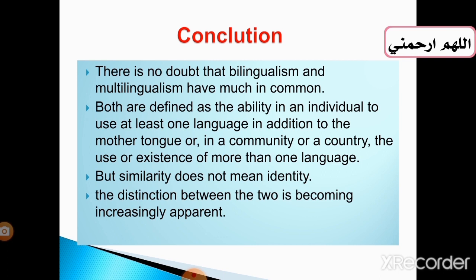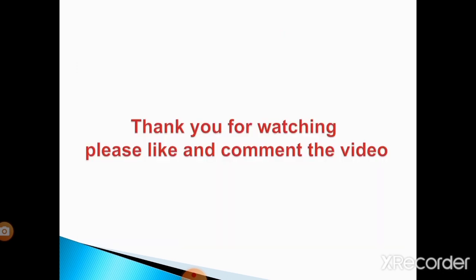To conclude, there is no doubt that bilingualism and multilingualism have much in common. Both are defined as the ability of an individual to use at least one language in addition to the mother tongue, or in a community or country the use or existence of more than one language. But similarity does not mean identity — the distinction between the two is becoming increasingly apparent. Thanks for watching. We hope you enjoyed our video and learned at least something. Please don't forget to comment and share.